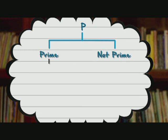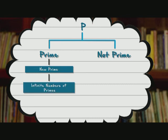If P is a prime, we have a new prime right away, which means there are not a finite number of primes, there is one larger prime. And our proof is complete.